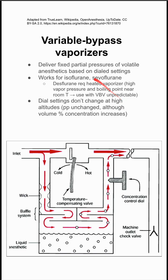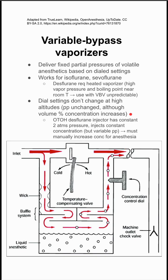Back to isoflurane and sevoflurane and the variable bypass vaporizers — when you dial settings, they don't have to change at high altitudes. The partial pressure that you get out remains unchanged, although the volume percent concentration does increase.